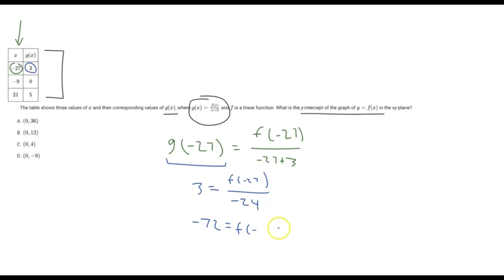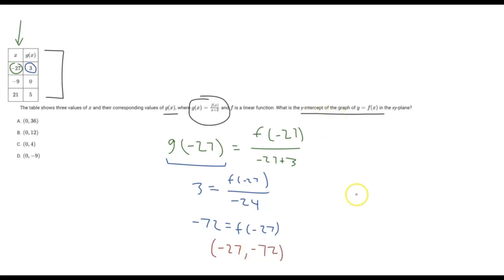So you might be wondering, why did I just go through this entire process? Well, here we've just given ourselves one coordinate point — f of negative 27 equals negative 72. That is just the coordinate point negative 27 comma negative 72. And we know for slope, if we're trying to find the y-intercept, as long as we have two points here, we can determine that because it's a linear function. So if you find two coordinate points, we can then create the equation for it and therefore determine the y-intercept.